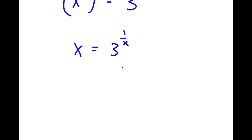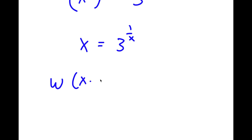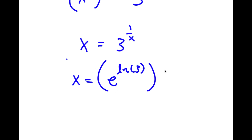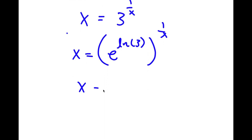The Lambert W function says: if I take the W Lambert function of something in the form x times e to the power of x, that equals x. I'm going to rewrite 3 to the power of 1 over x as e to the power of ln 3 to the power of 1 over x. Since e and ln cancel, e to the power of ln 3 is just 3. So this becomes e to the power of ln 3 over x.